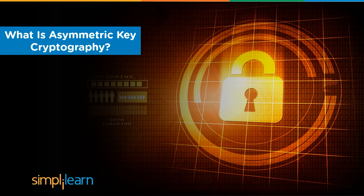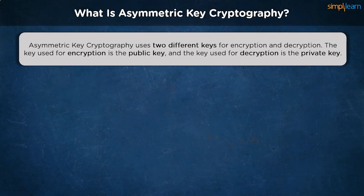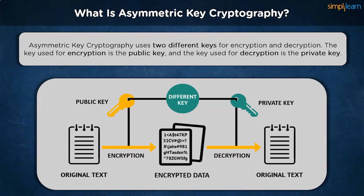Let's understand what asymmetric key cryptography is. Asymmetric encryption uses a double layer of protection. There are two different keys at play here: a private key and a public key. A public key is used to encrypt the information pre-transit and a private key is used to decrypt the data post-transit. These pair of keys must belong to the receiver of the message. The public keys can be shared via messaging, blog posts or key servers, and there are no restrictions.